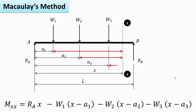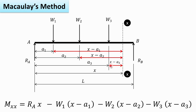Those distances are shown in the figure. If the total distance from the support is X, then subtracting A1 gives the perpendicular distance between W1 and section XX. So X minus A1 is the perpendicular distance between W1 and section XX. X minus A2 is the perpendicular distance between W2, and X minus A3 is the perpendicular distance between W3 and section XX.